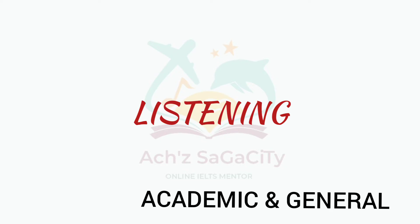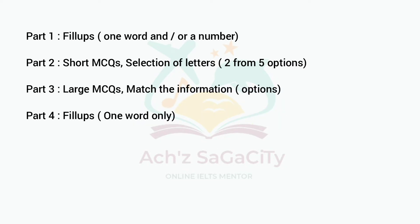Starting from the listening module for academic and general, in Part 1 this time you can expect a telephonic conversation between two speakers, and the question category will be fill-up type of questions — that will be one word or a number. You can use one word, a number, or both together. This part you can expect at an easy level. Part 2 you can expect a conversation between two speakers, rather than map completion.